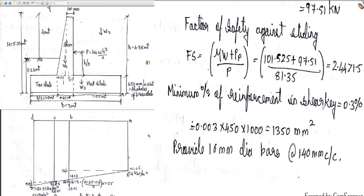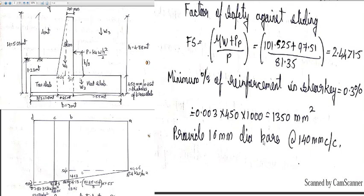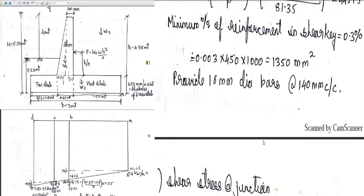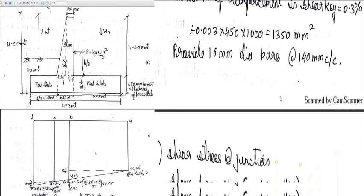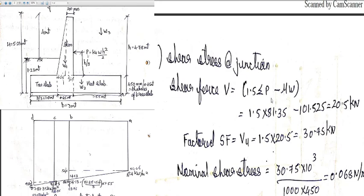The minimum percentage of reinforcement in the shear key is 0.3%. So Ast = 0.3/100 × 450 × 1000 = 1350 mm². We provide 16 mm diameter bars at 140 mm center-to-center.